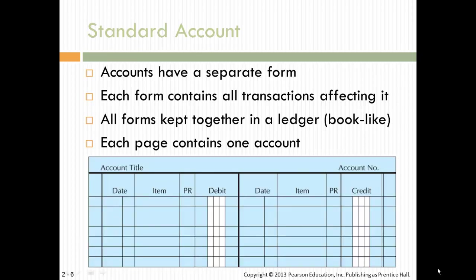Here is your account page. It's called a ledger and it's book-like. It includes the date, the item, the post reference, and the debit on the left side, and the date, item, post reference, and credit on the right side. It's organized with the account number and account title, all set up in a very linear fashion.